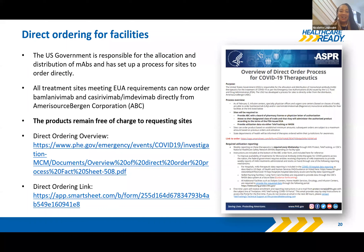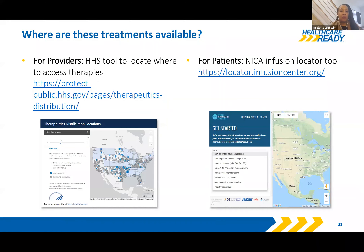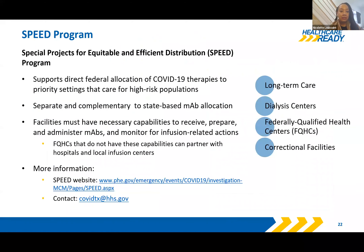There are two tools to be aware of for locating treatments. One is a great tool created by HHS ASPR to locate therapies — the HHS site URL is provided on the slide. Our friends at NCPA have also created a tool more oriented towards patients: an infusion locator tool that is a longstanding resource also being used to help patients identify where to find COVID-19 monoclonal antibodies. The SPEED program — Special Projects for Equitable and Efficient Distribution — supports the federal allocation of COVID-19 therapeutics to facility types that care for high-risk populations.